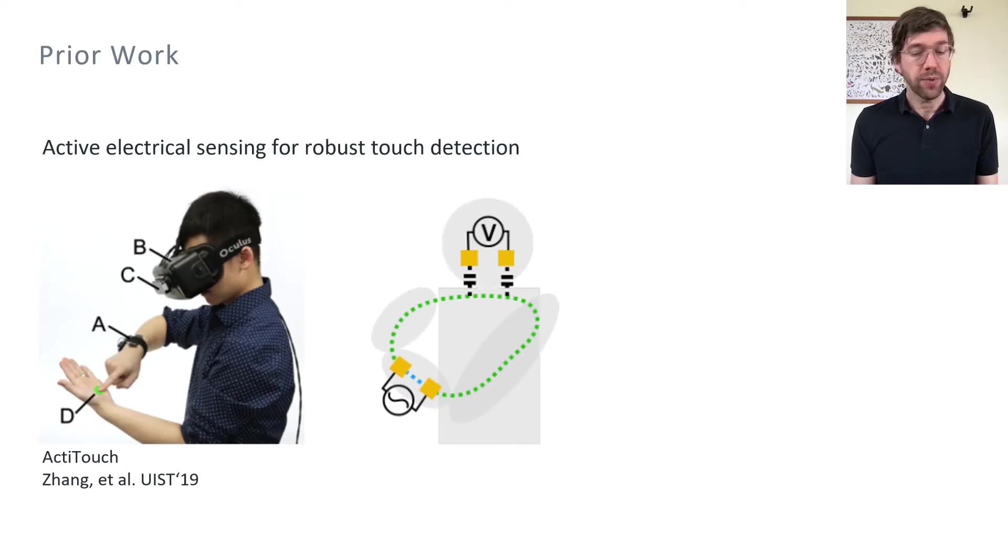ActiTouch, presented in 2019, is a nice solution to the problem. It uses a wristband to couple an electrical signal to the user's body. A receiver circuit is integrated into a VR headset. When the user touches their opposite hand, an electrical path is formed that changes the strength of the signal arriving at the headset. This change in signal strength constitutes a touch event. With the electrical approach, ActiTouch can detect very subtle touch gestures with high accuracy.